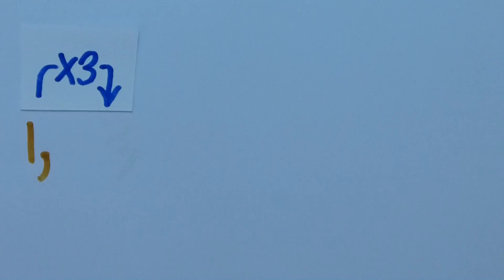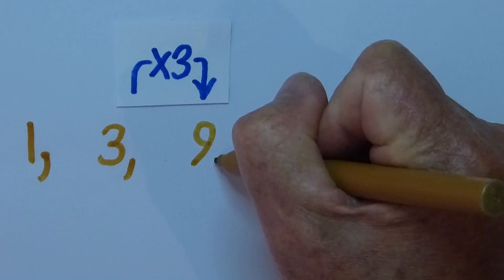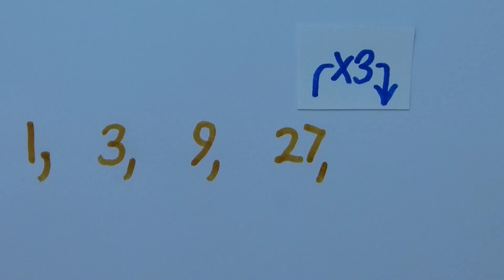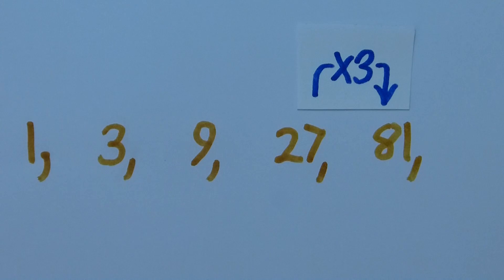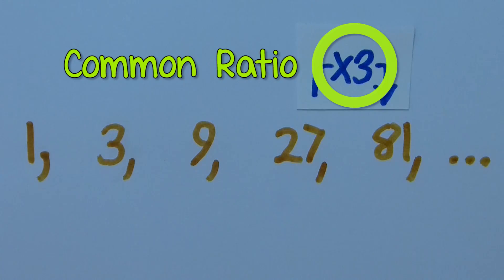Start at 1, by 3 is 3, by 3 is 9, by 3 is 27, by 3 is 81, and so on. What we multiply by each time is called the common ratio.